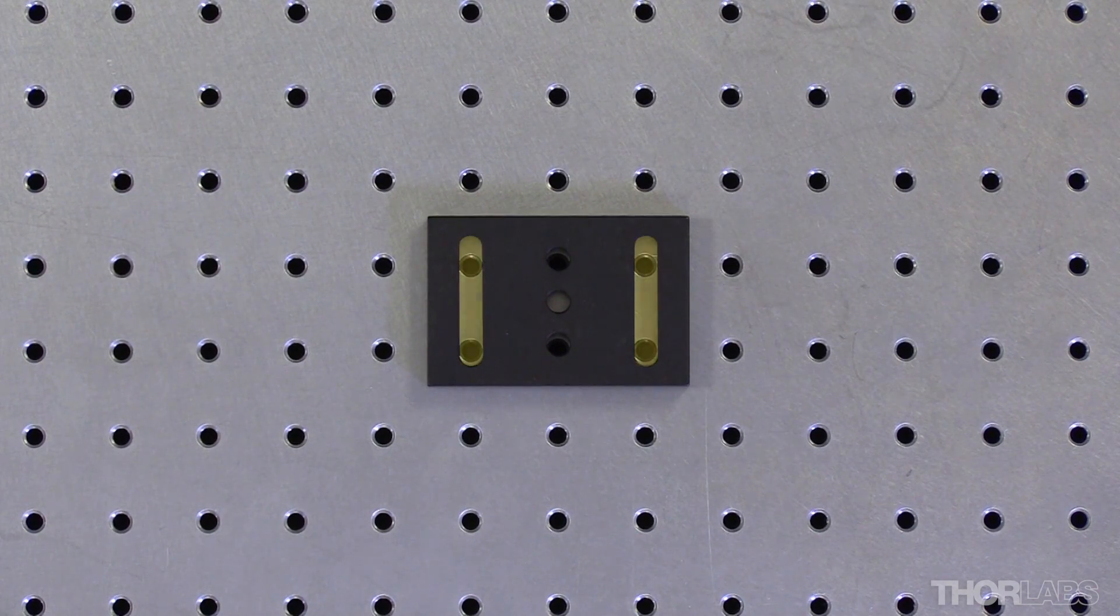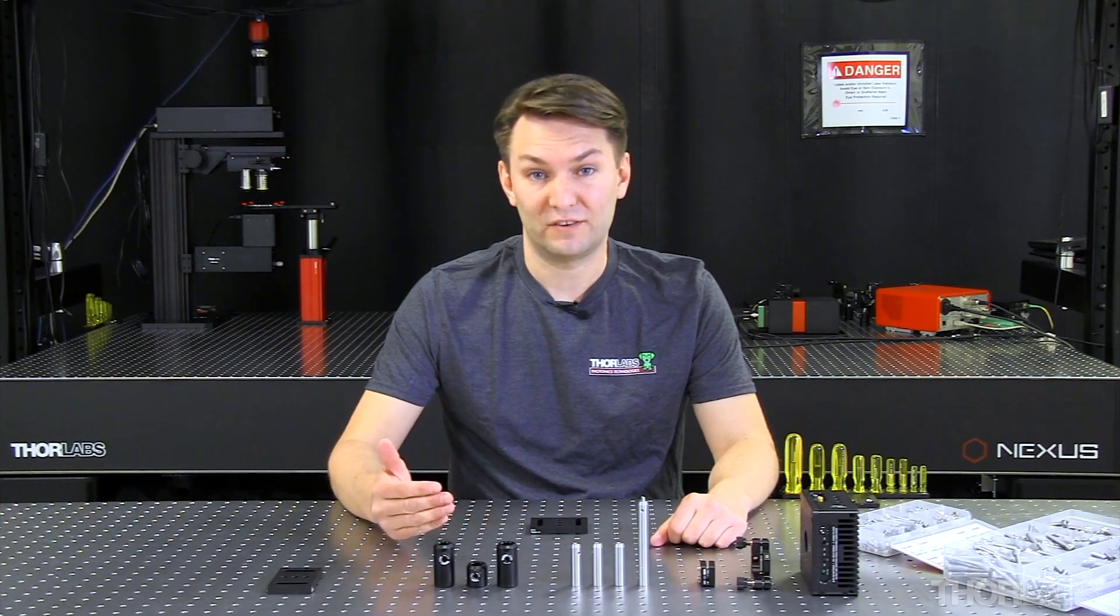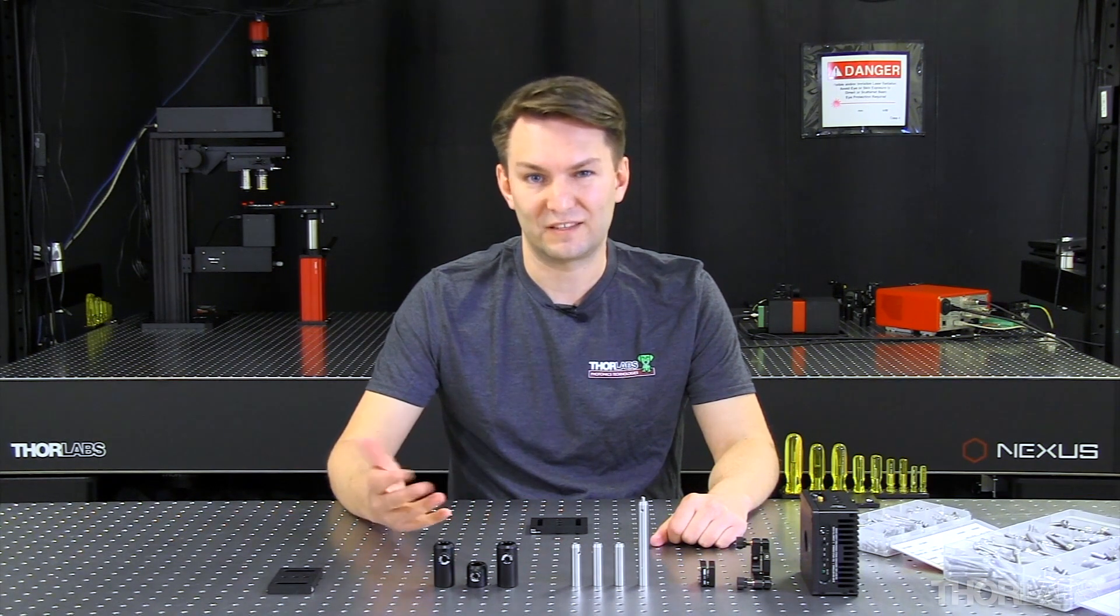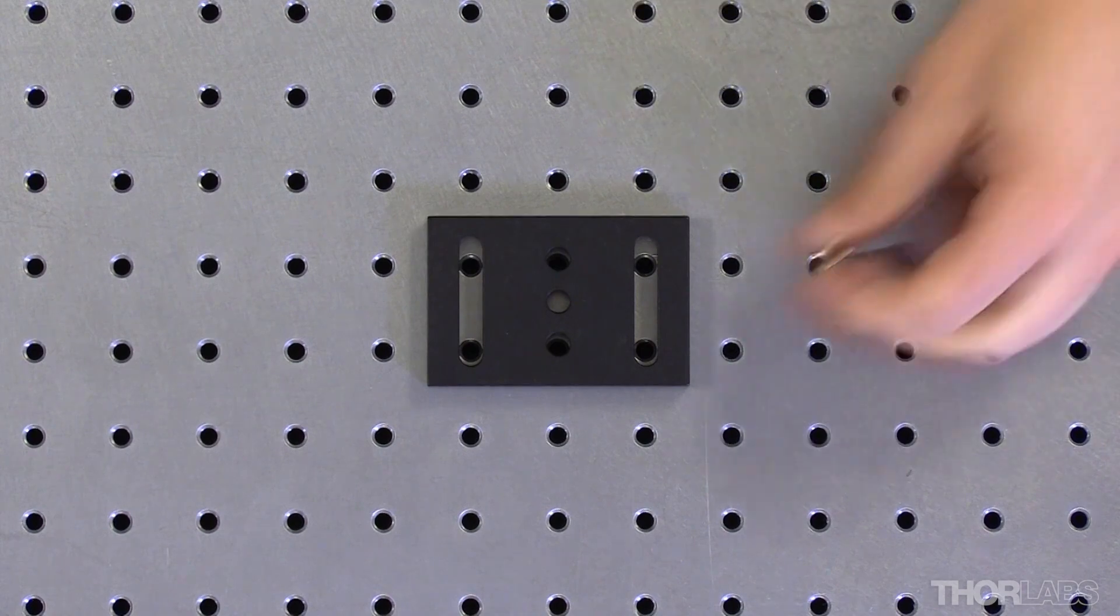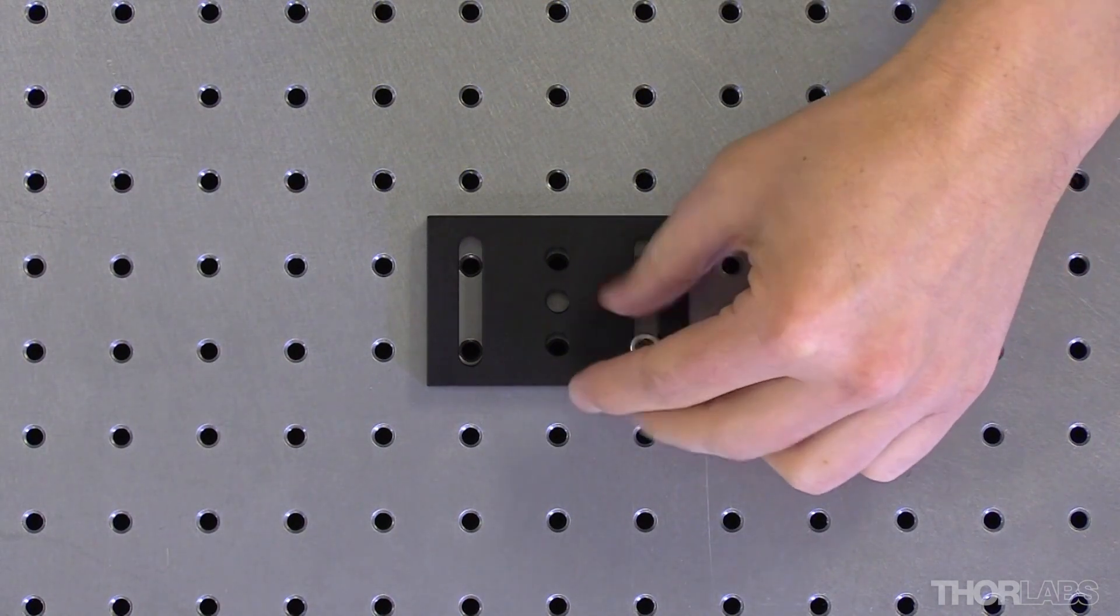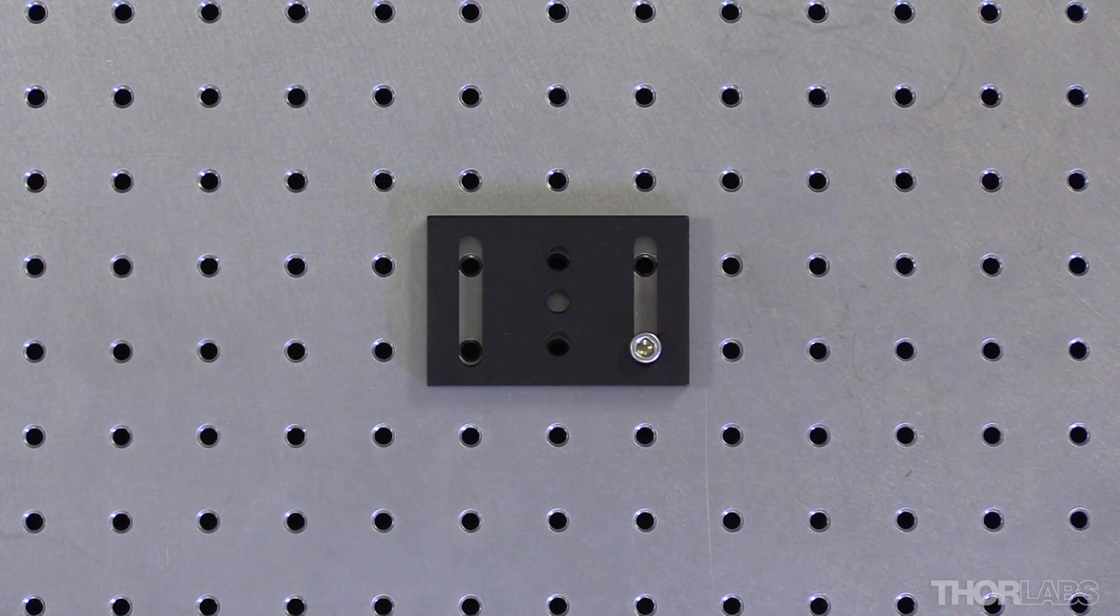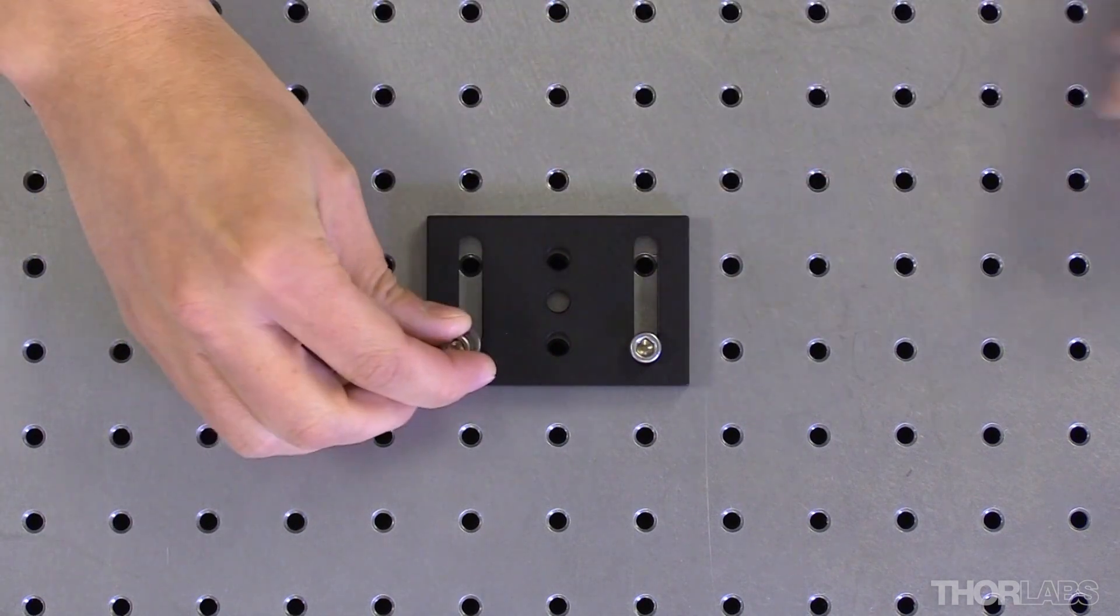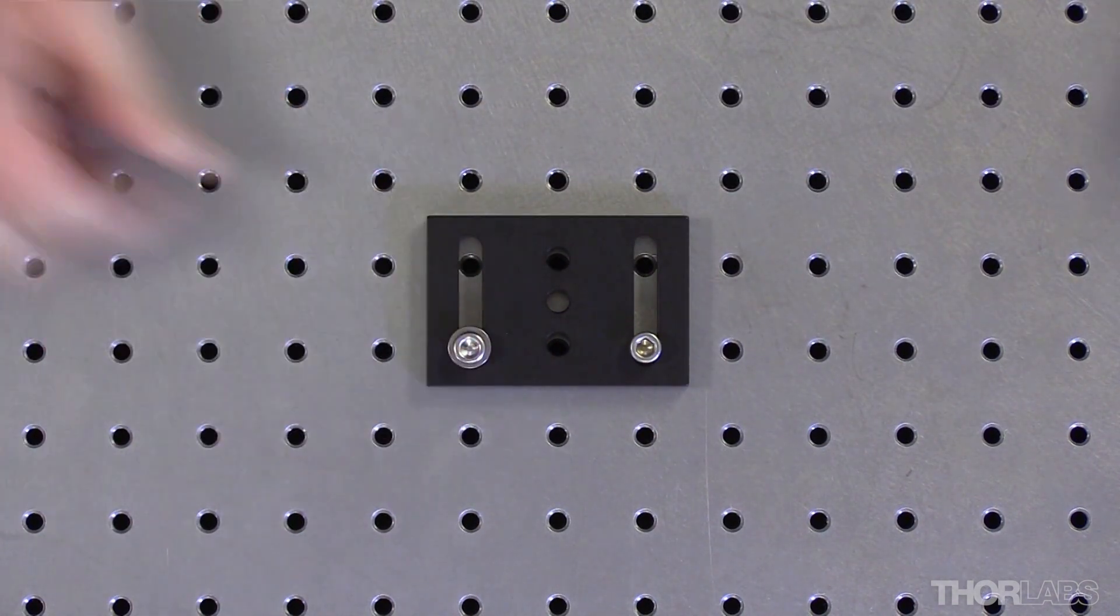Now this particular base has two mounting slots for us to secure the base to the table with screws. Whenever there is a mounting slot, I always try to remember to use a washer. Let's see why. So on one side, I'm going to just attach a screw. And on the other side, I'm going to add a washer with the curved shiny side of the washer against my anodized base.